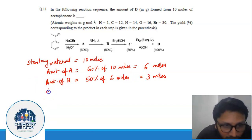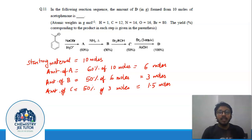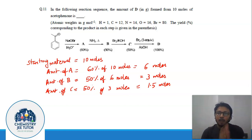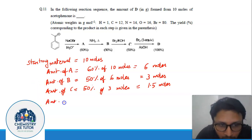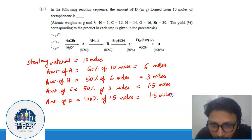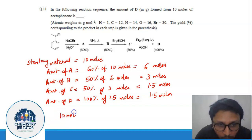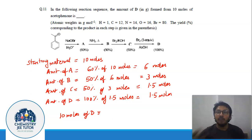The amount of C is the same approach — it is 50% of 3 moles, which is 1.5 moles. Now D is produced at 100% yield, so whatever amount of C we got is the amount of D we get. We got 1.5 moles of C, so the amount of D is also 1.5 moles.